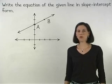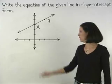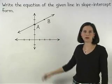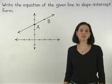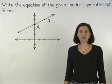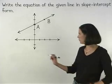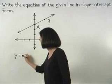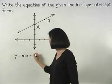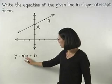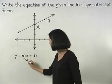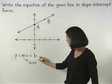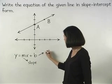In this example, we're asked to write the equation of the given line in slope-intercept form. Remember that slope-intercept form is the same thing as y equals mx plus b form, where m represents the slope of the line and b represents the y-intercept.